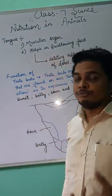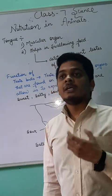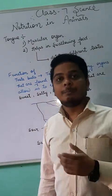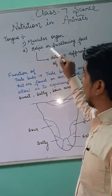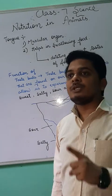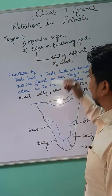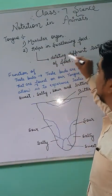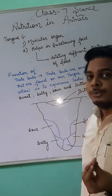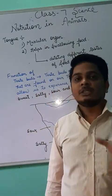The tongue is a highly muscular organ, richly supplied with blood vessels, which helps in swallowing of food. The very first function of the tongue is it helps in swallowing of food. The second important function is it helps in detecting different tastes of food.